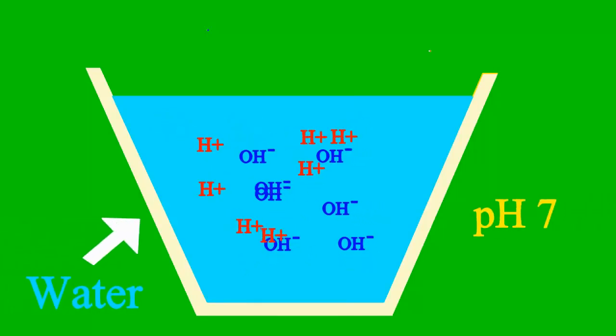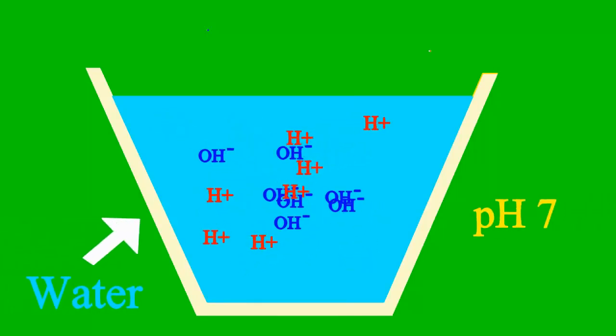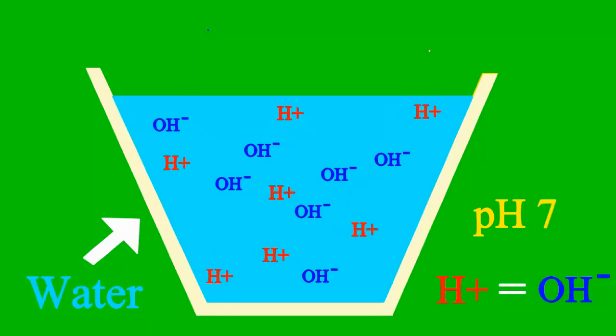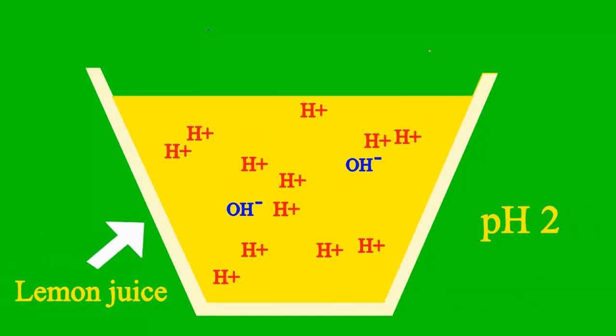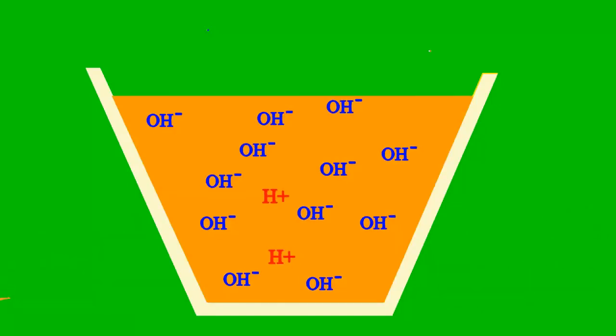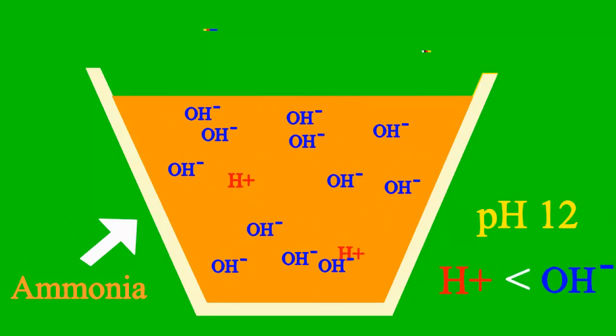When the pH is 7, then it's a case where the sample is neither an acid nor base. But less than 7, it's an acid, and more than 7, it's a base all the way.